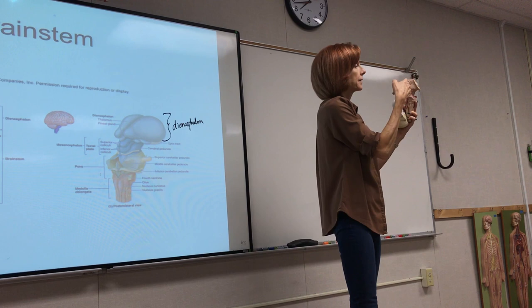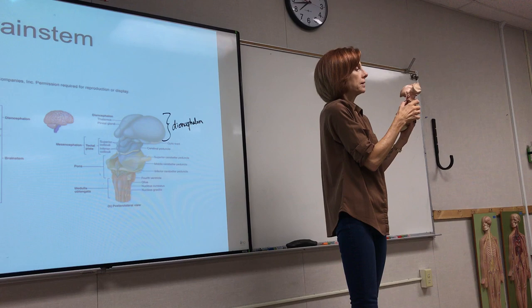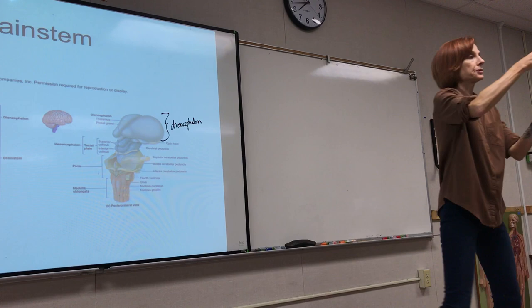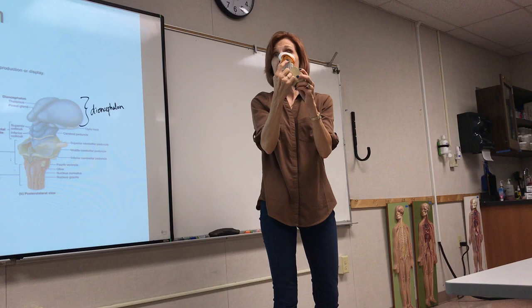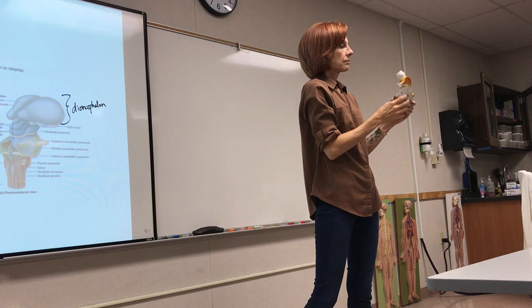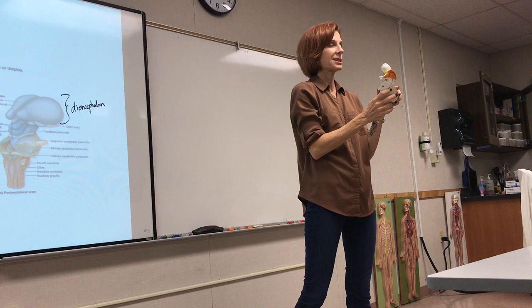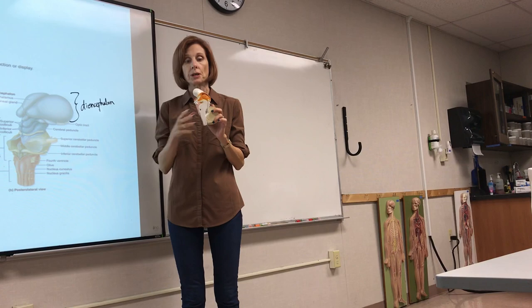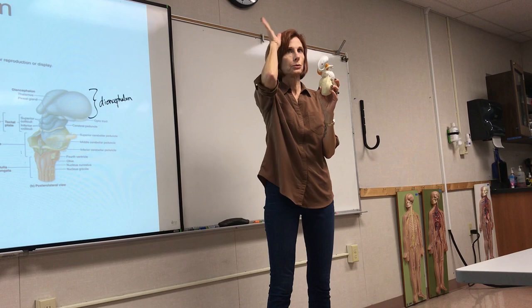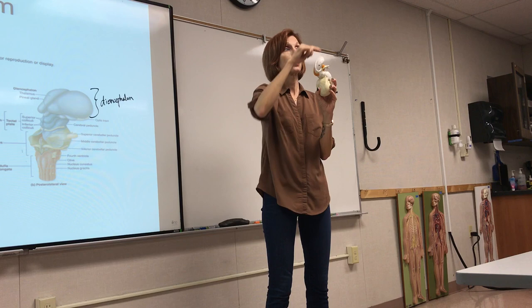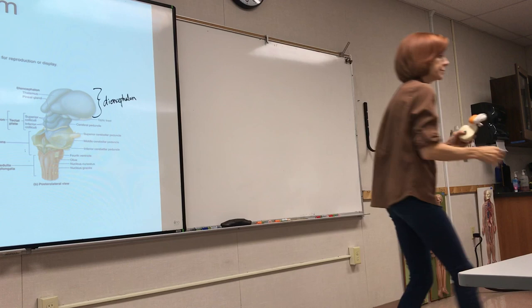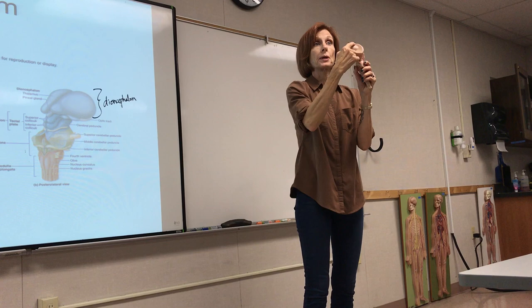In the midsagittal cut you can see the thalamus, intermediate mass, pineal gland, and the brainstem below. Also notice this little mohawk-looking structure — these are the axons that radiate out toward the cortex, called the corona radiata. If you could follow them down inside between the nuclei, that would be the internal capsule.